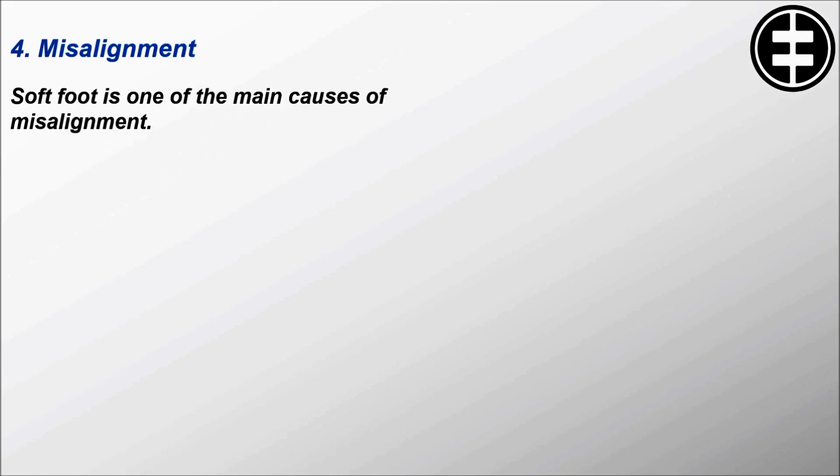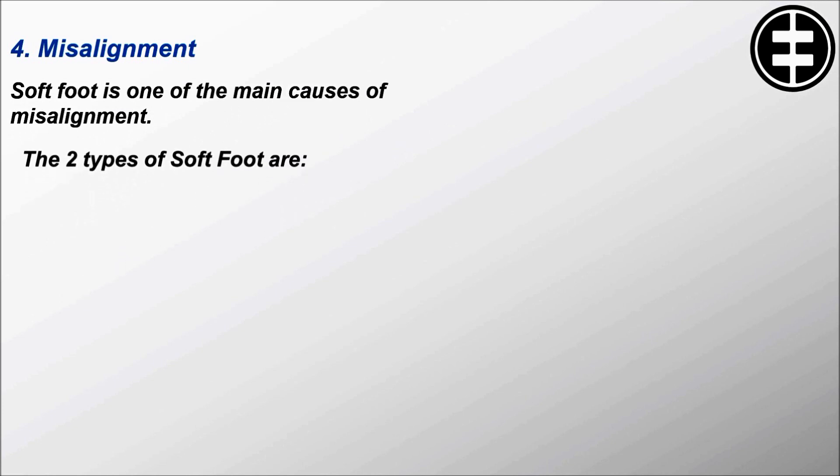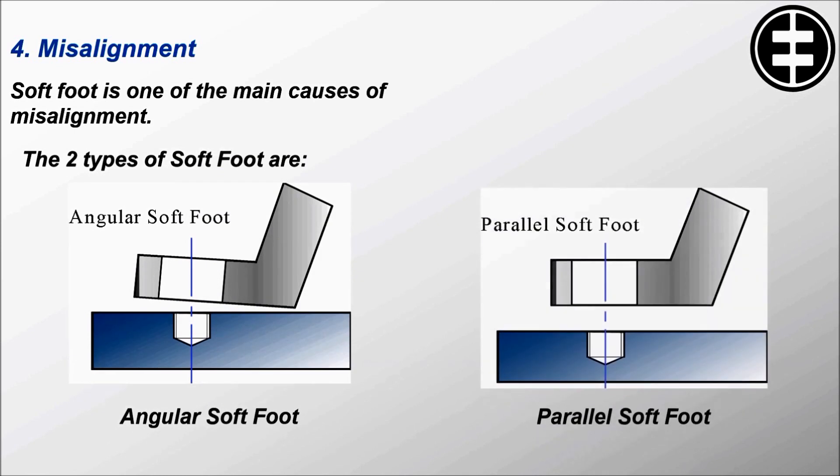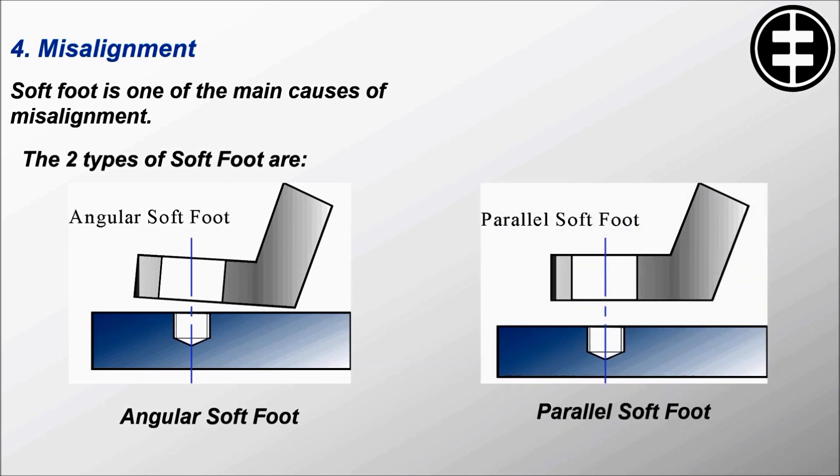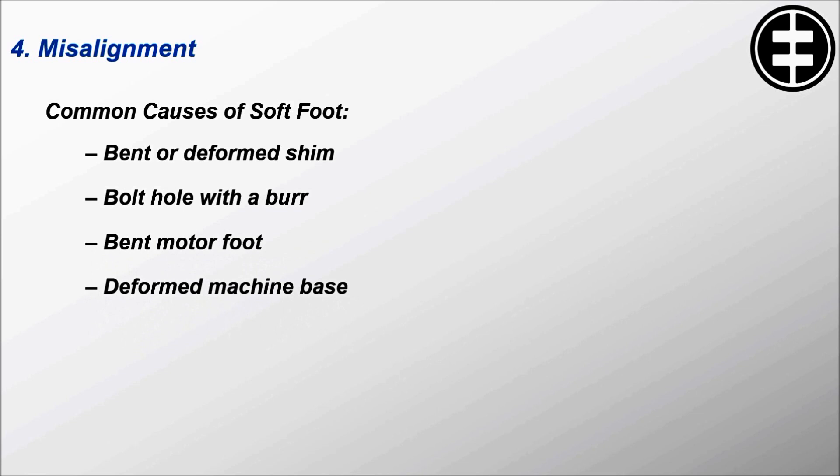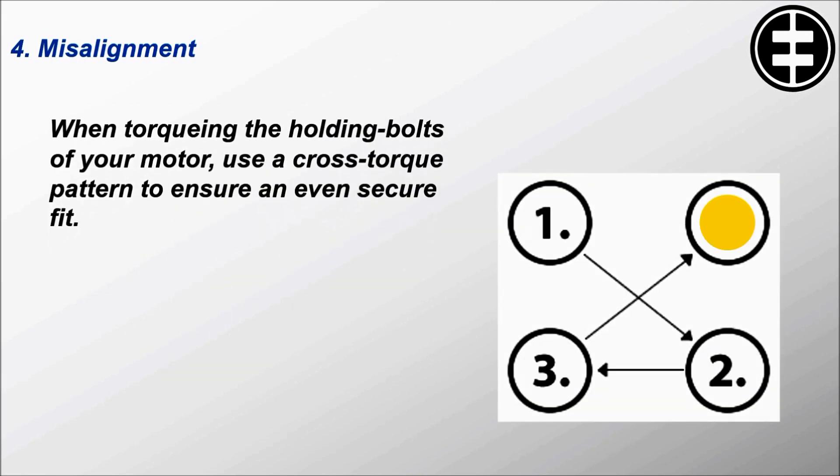Soft foot is one of the main causes of misalignment. The two types of soft foot are angular soft foot and parallel soft foot. Common causes of soft foot: bent or deformed shim, bolt hole with a burr, bent motor foot, deformed machine base. When torquing the holding bolts of your motor, use a cross torque pattern to ensure an even, secure fit.